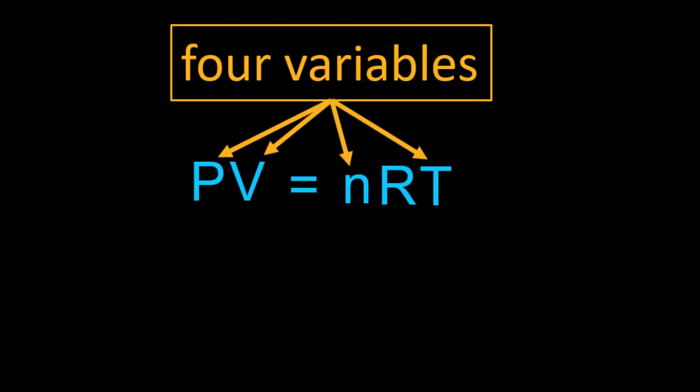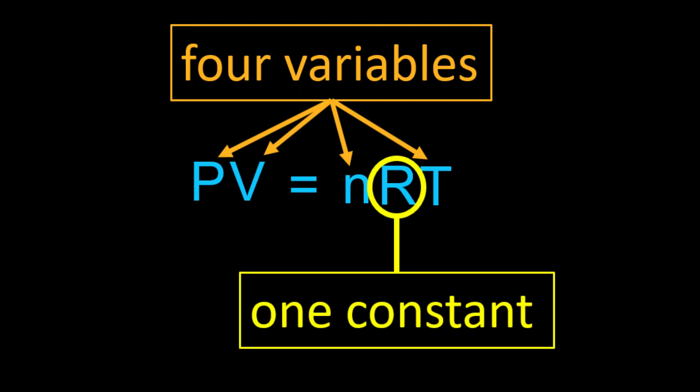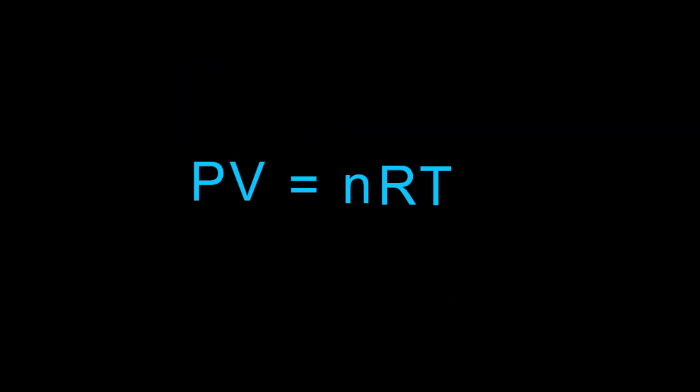The equation has four variables and one constant, R. Because R has many values depending on the units used, you have to determine what is the appropriate value of R for a given problem.